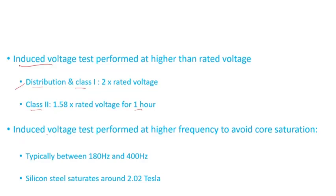The induced voltage test is also performed at higher frequency, and the reason is to avoid core saturation. We'll see an example of why we increase the frequency. Typically the frequency is between 180 Hertz and 400 Hertz, and one thing to keep in mind: silicon steel material saturates around 2.02 Tesla. That's really the limitation for the core steel.